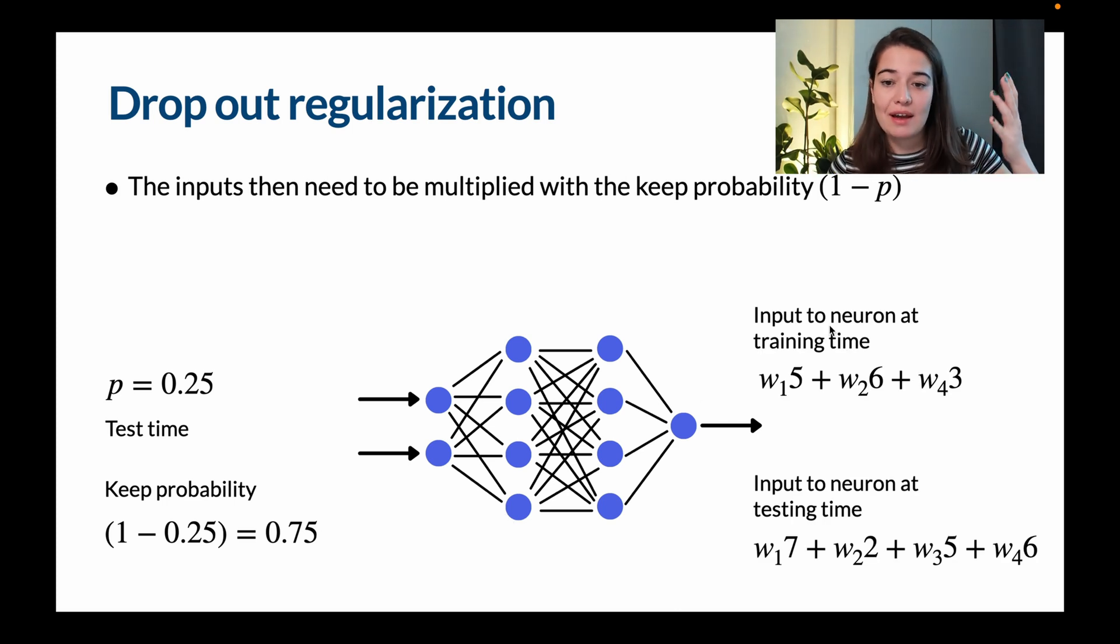Because if you think about it, because we are missing dropout rate amount of, or in this example, one-fourth of all the neurons on average during the training steps, we are basically going to be receiving three inputs. But for the test time, we are going to have all of our neurons, and then we're going to be receiving four. So that's why we need to multiply our inputs with the keep probability to make sure that the model is able to predict correct things, and it's not really rigged in any way.